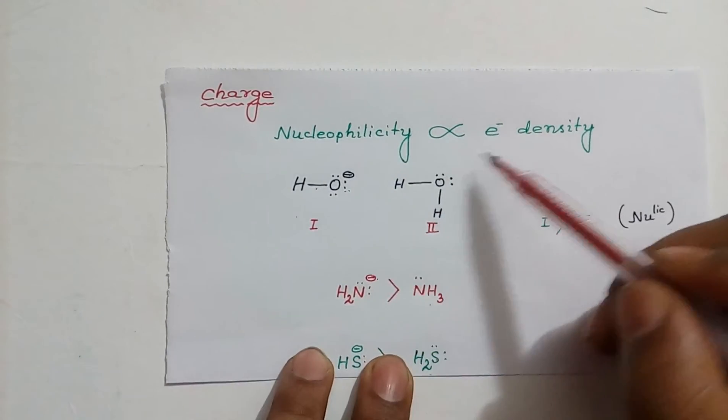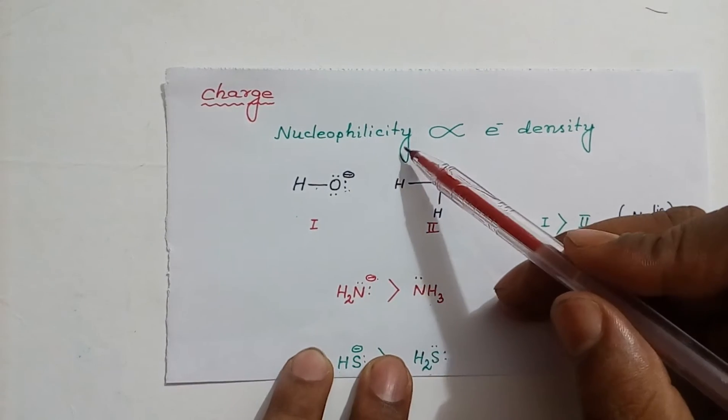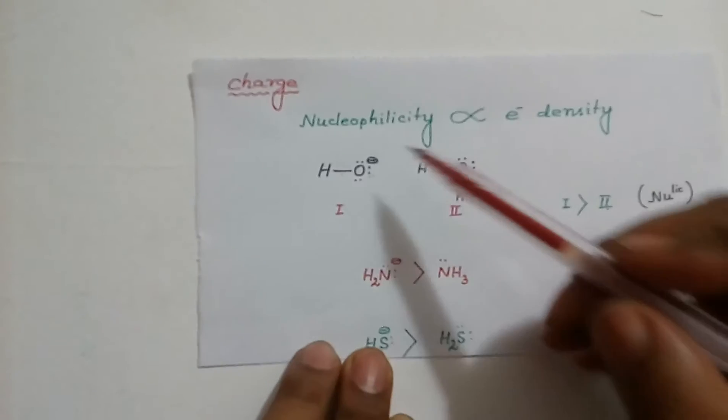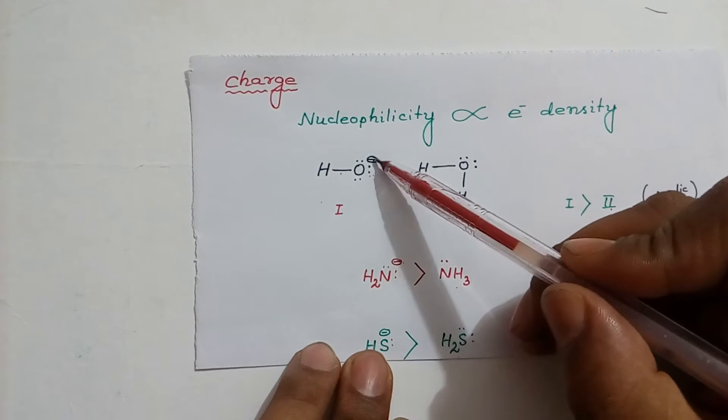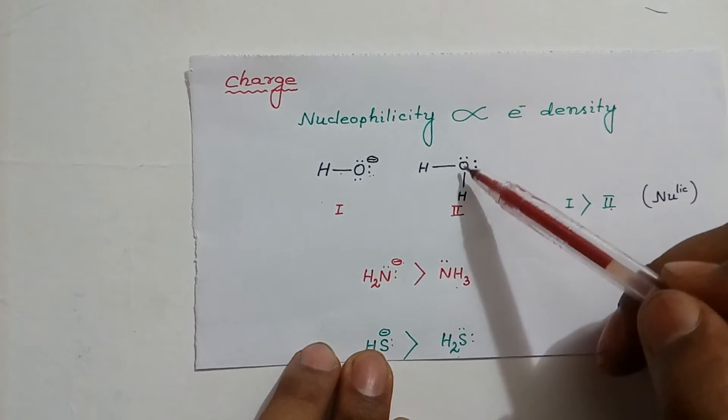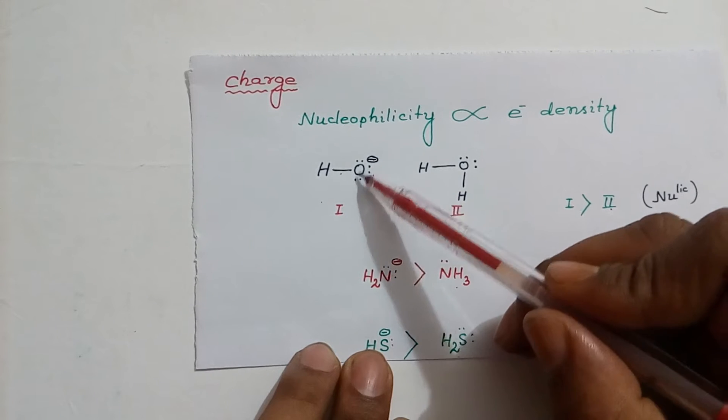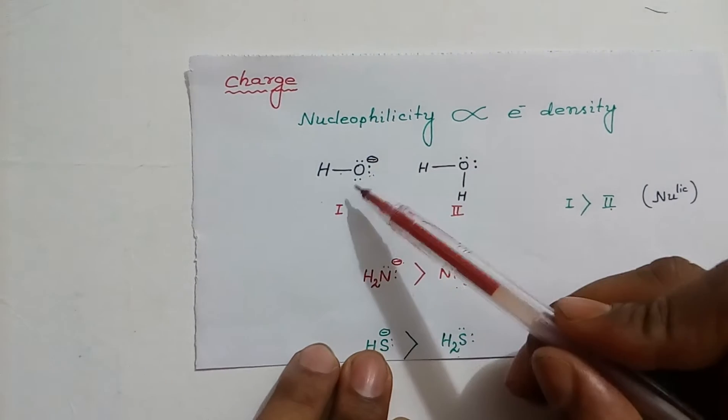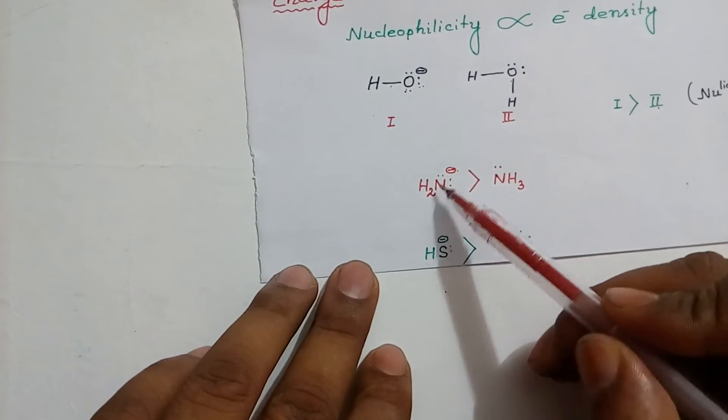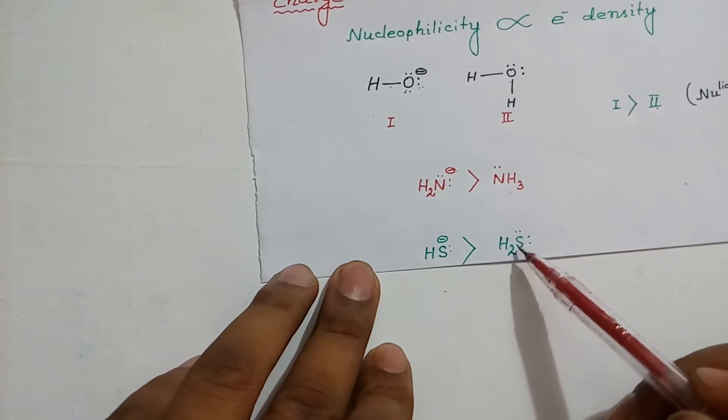Charge. More the electron density of an atom, it will be more nucleophilic. Compare between hydroxide ion and water. Here, on oxygen we have negative charge. Here, we do not have any negative charge. So, as compared with oxygen in water, this O- has more electron density. So, it will act as more nucleophilic than this. Similarly, NH2- is more nucleophilic than NH3. HS- is more nucleophilic than H2S.